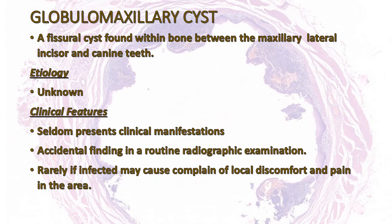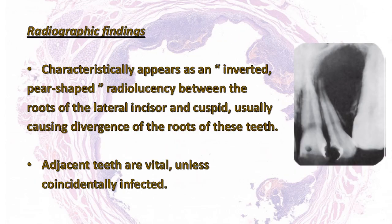Coming to the globular maxillary cyst — a fissural cyst found within bone between the maxillary lateral incisor and canine. It is of unknown etiology. Clinical features seldom present any clinical manifestations; it is usually found as an accidental finding in routine radiographic examination. Rarely, if infected, it may cause local discomfort and pain. Radiographically, an inverted pear-shaped radiolucency is seen between the roots of the lateral incisor and the cuspid, usually causing divergence of the roots. The adjacent teeth are vital unless coincidentally infected.